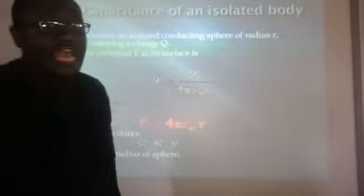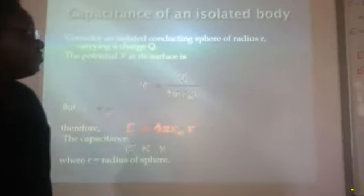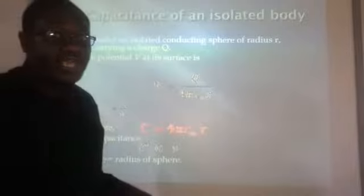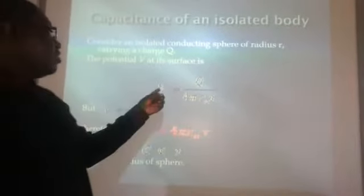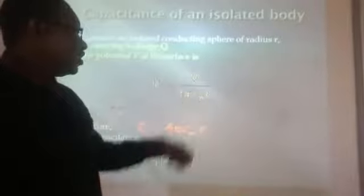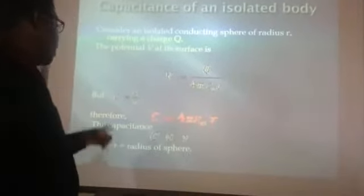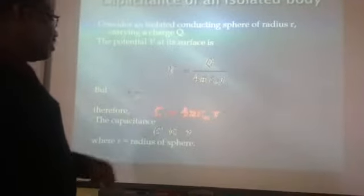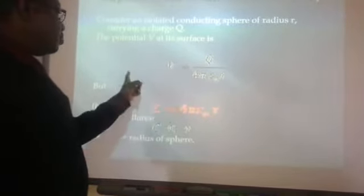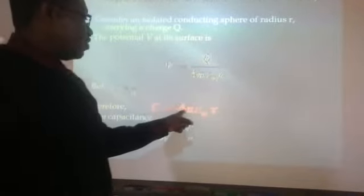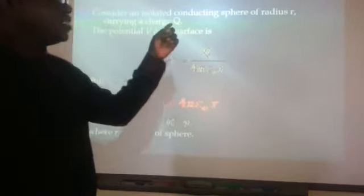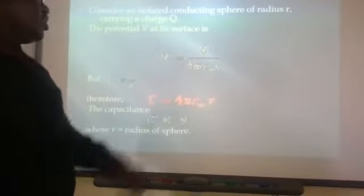For the capacitance of an isolated body, consider an isolated conducting sphere of radius R carrying charge Q. The potential at the surface is V = Q / (4πε₀R), where ε₀ is the permittivity of free space. Since C = Q/V, substituting for V, the Q's cancel and we get C = 4πε₀R, meaning the capacitance of an isolated sphere is proportional to its radius.